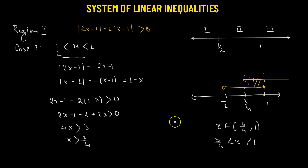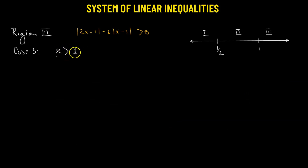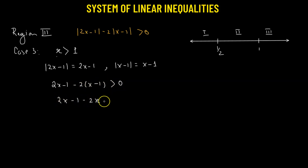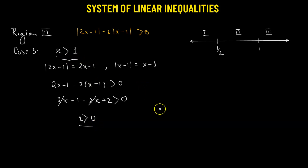In region 3 — Case 3 — x is greater than 1. Here, absolute value of (2x minus 1) equals (2x minus 1) and absolute value of (x minus 1) equals (x minus 1). Substituting: (2x minus 1) minus 2(x minus 1) greater than 0, giving 2x minus 1 minus 2x plus 2 greater than 0, which simplifies to 1 greater than 0. This is always true, so Case 3 gives the solution x greater than 1, or x belongs to (1, infinity).